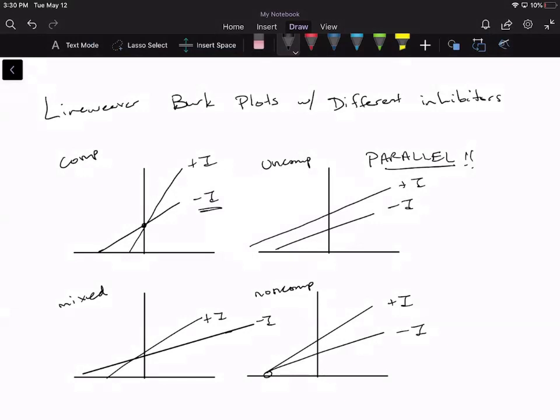Minus I means that you didn't add an inhibitor, plus I means that you have the inhibitor added. So I'm just going to annotate this. This is with inhibitor, and this is without inhibitor.